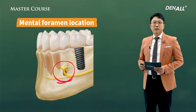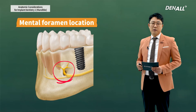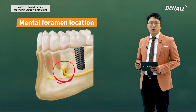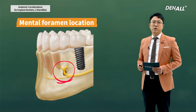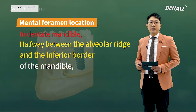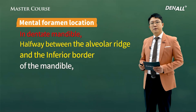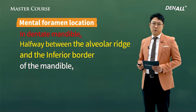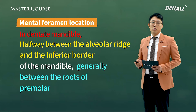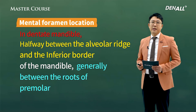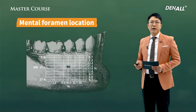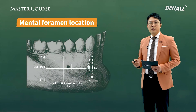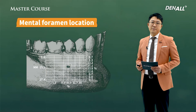The mental nerve comes from the mental foramen and controls the sensation of the lower lip. The mental foramen location is very important because it can be damaged during implant placement. Therefore, mental foramen location should be identified before surgery. In the dentate mandible, it is located halfway between the alveolar ridge and the inferior border, generally below the roots of the premolars.